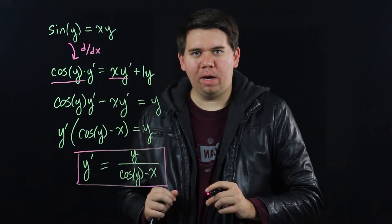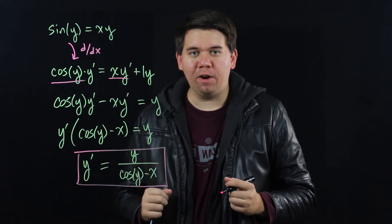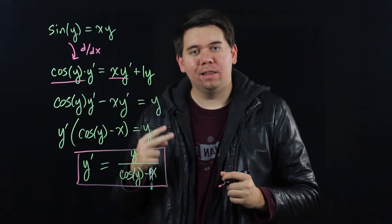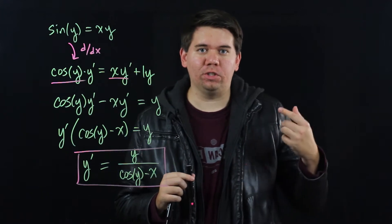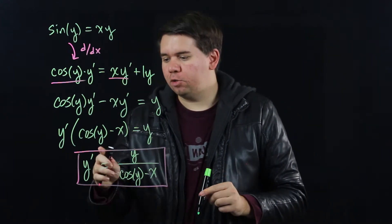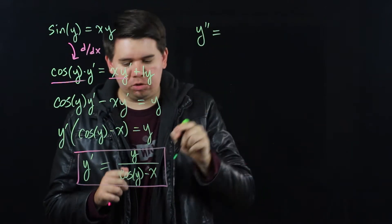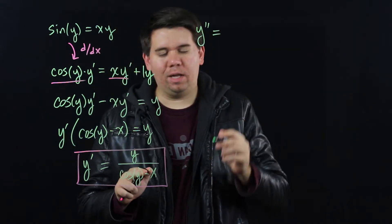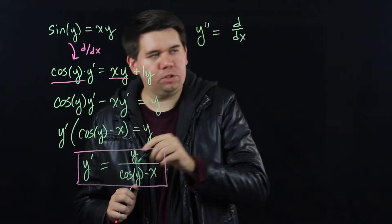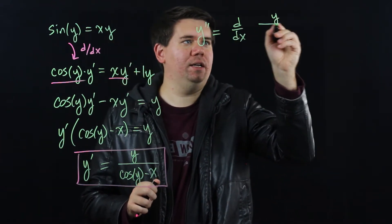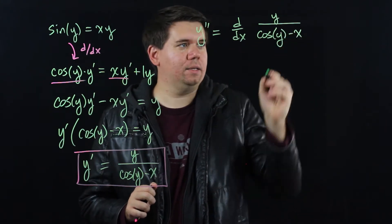Now that we have y prime you might be satisfied, but why stop there? Let's go on to calculate y double prime, the second derivative. We'll need to make use of implicit differentiation again. Notice since we know what y prime is, we can say y double prime will just be the derivative of y prime. So that's just going to be the derivative of this quotient, y divided by cosine of y minus x.